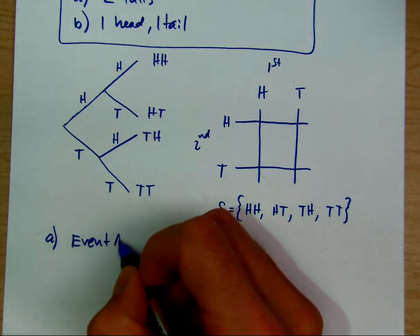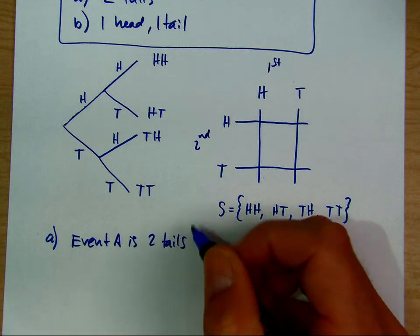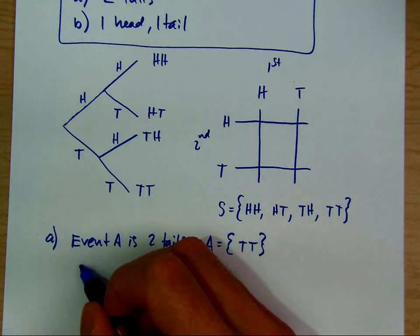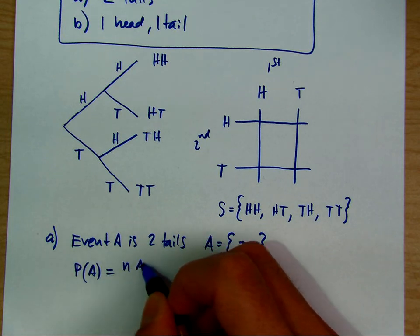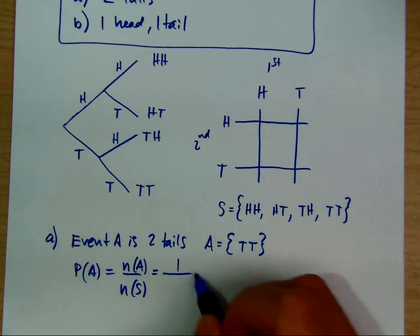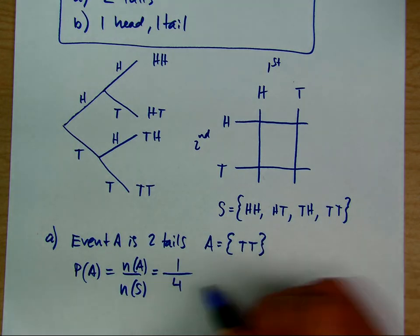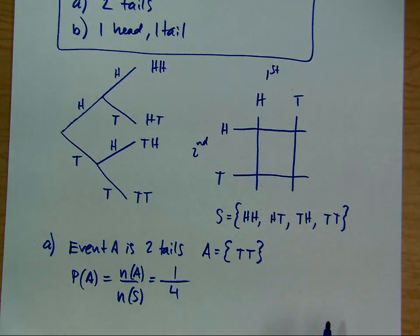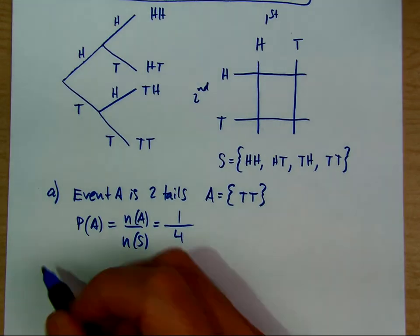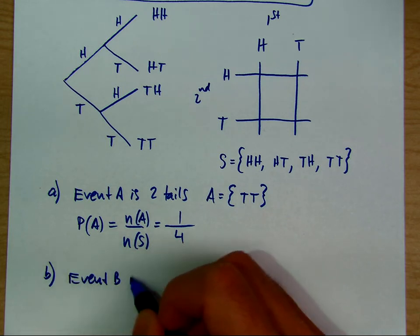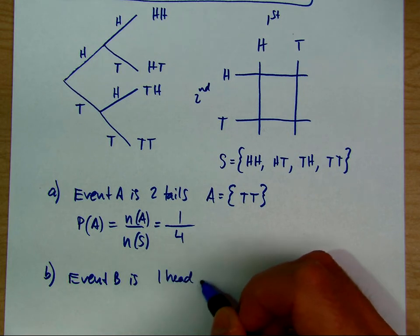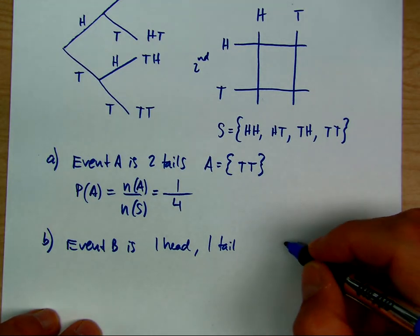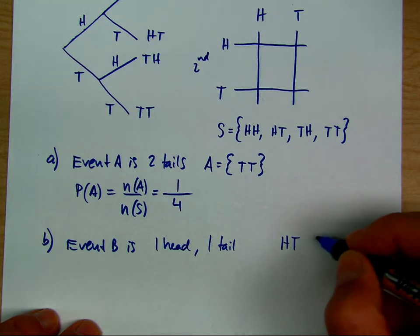Let's say event A is two tails — there is one element of two tails. So the probability of A is the number in A over the number in the sample space: one outcome in event A and four outcomes in the sample space. We need to be careful reading these problems — the probability of heads then tails is different from one head and one tail, since the latter doesn't specify order.